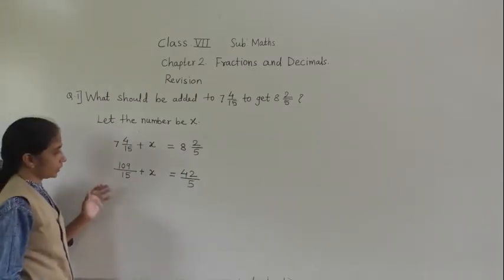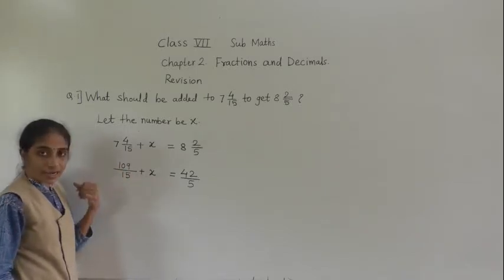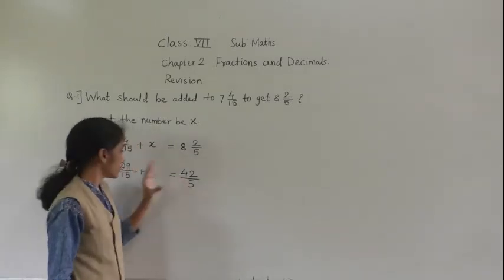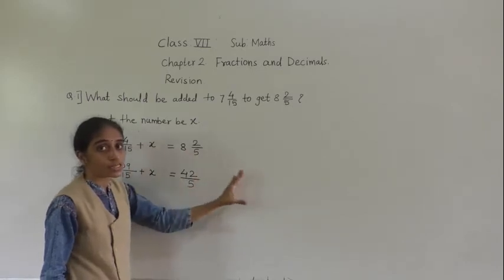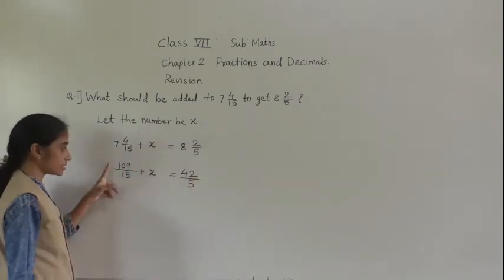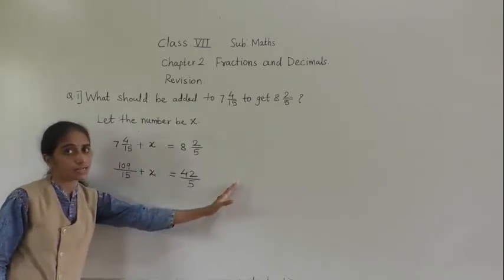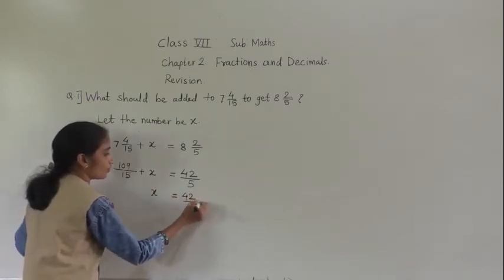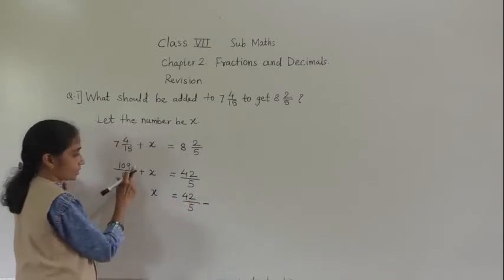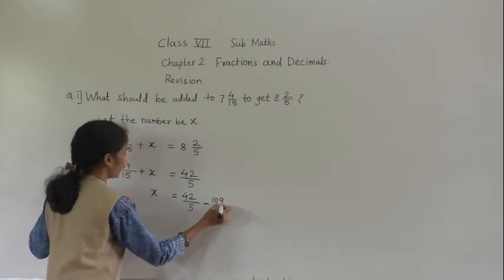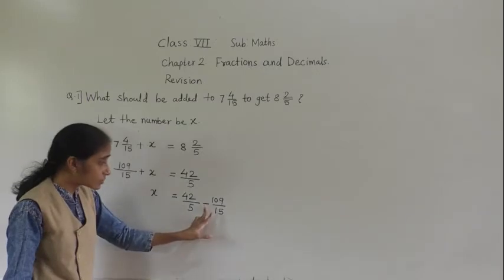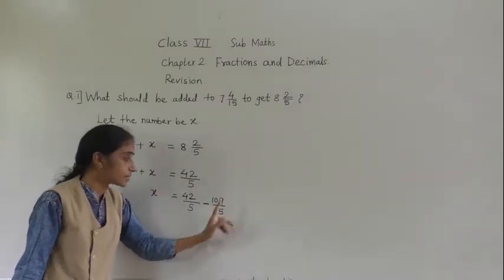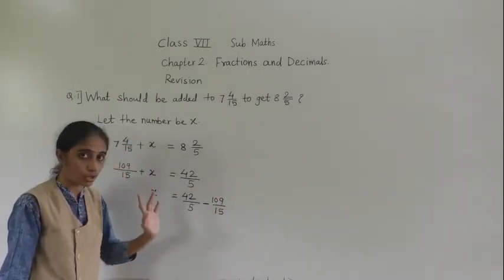Now we are going to transfer this number to the right hand side. This plus will transfer to that side, then it will become minus. So x is equal to 42 upon 5 minus 109 upon 15.